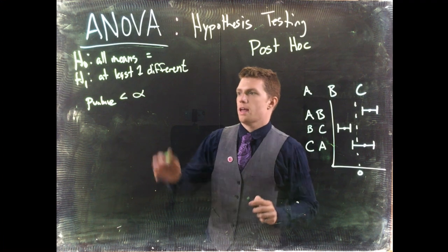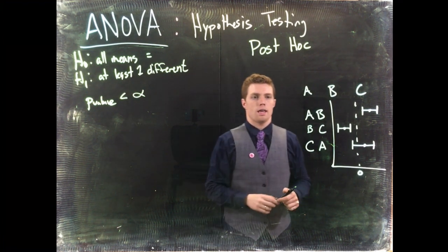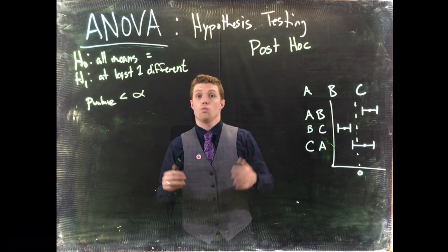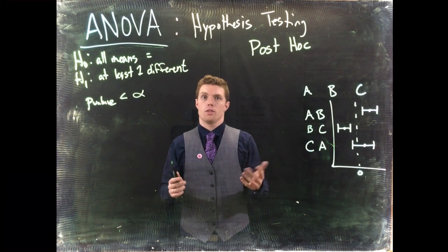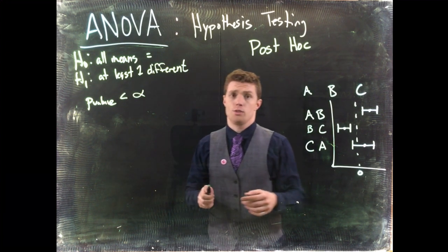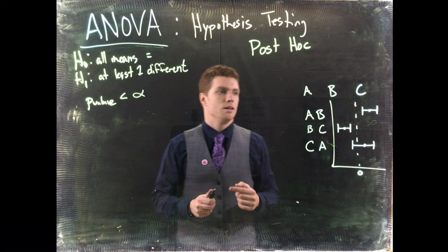So our post-hocs is after we make our conclusion and then we want to actually know which groups are different from the other. We know that if we get a significant result at least one is different. Which one?